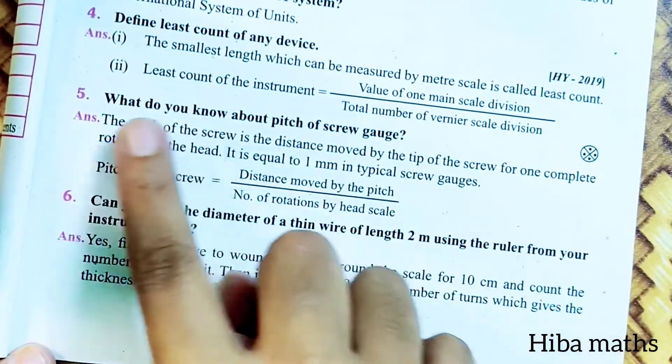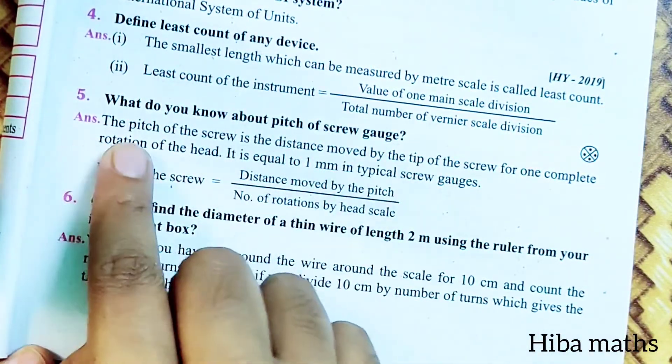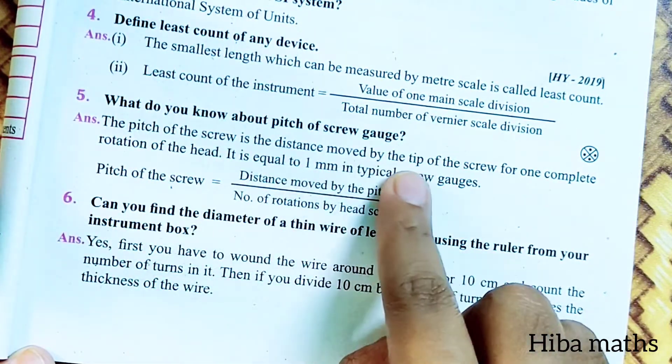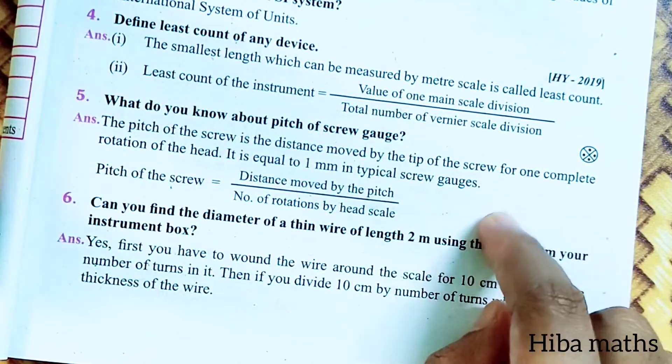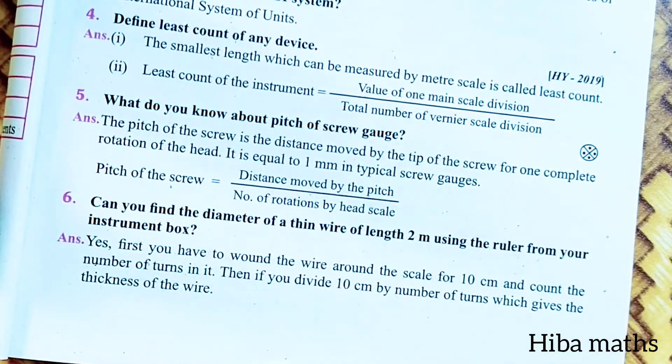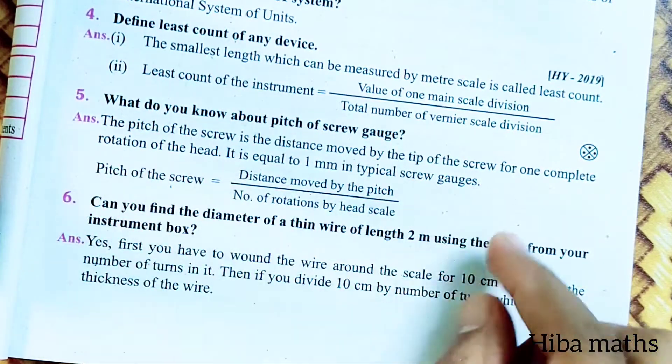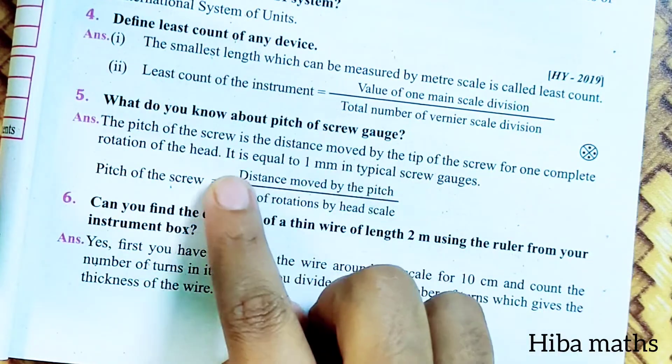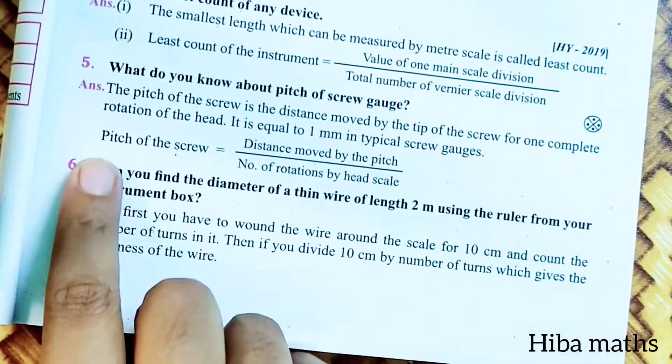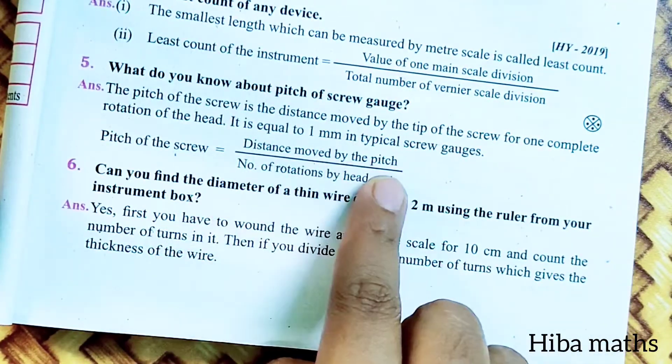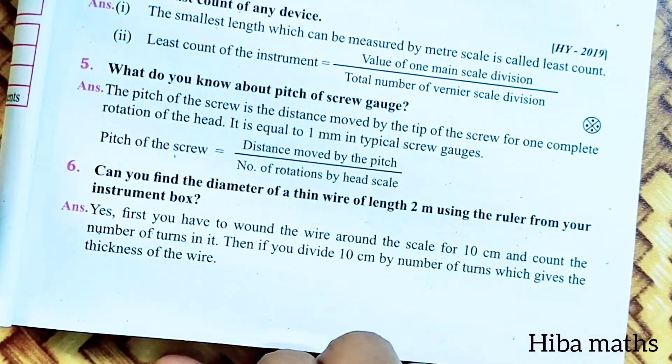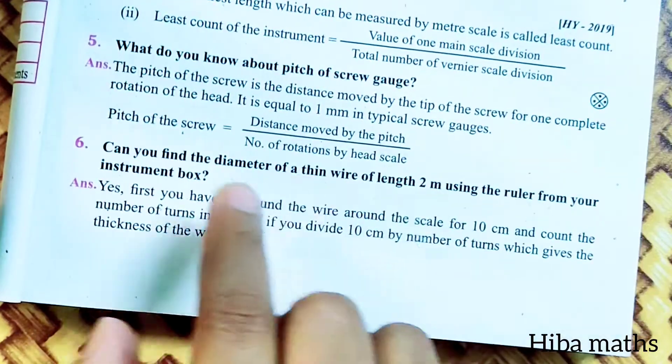What do you know about pitch of screw gauge? The pitch of the screw gauge is the distance moved by the tip of the screw for one complete rotation of the head. It is equal to 1 mm in typical screw gauges. Pitch of the screw equals distance moved by the pitch divided by number of rotations by the head scale. The formula is very important.